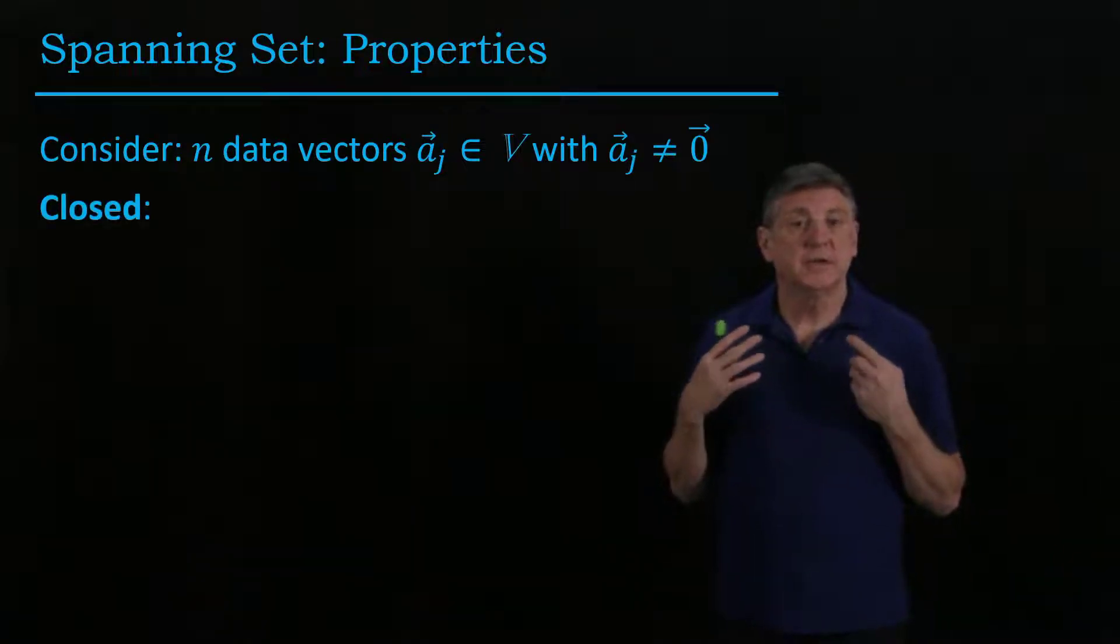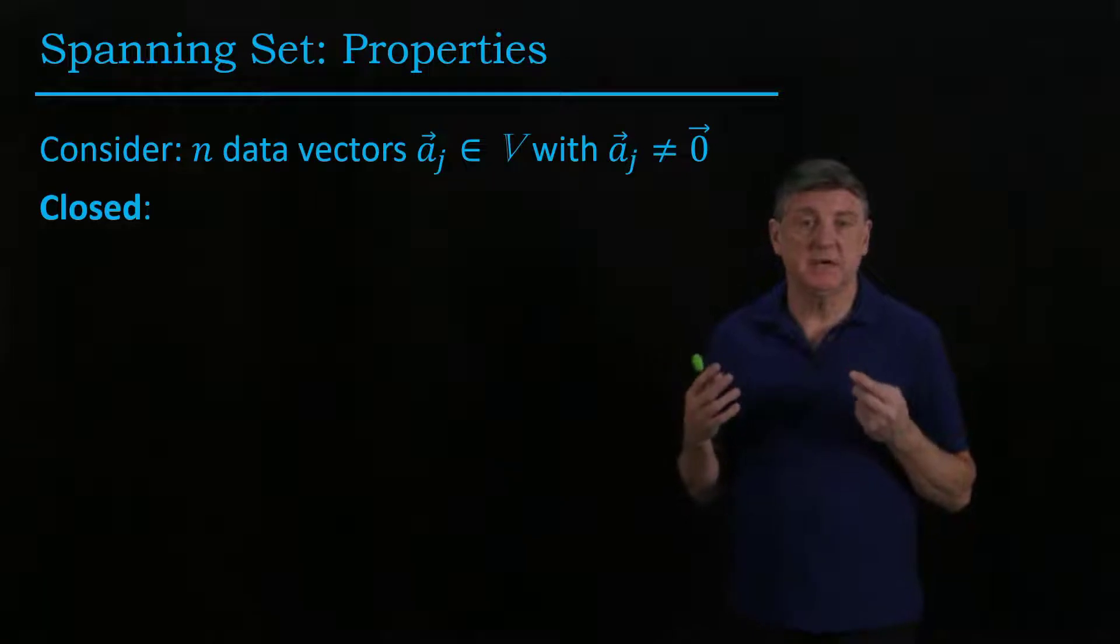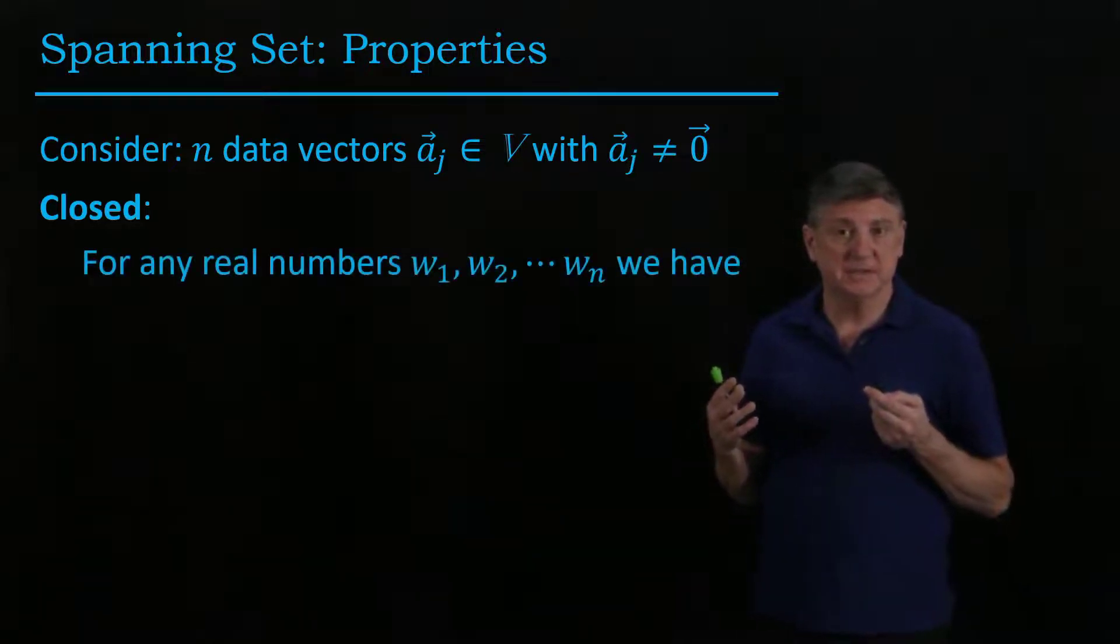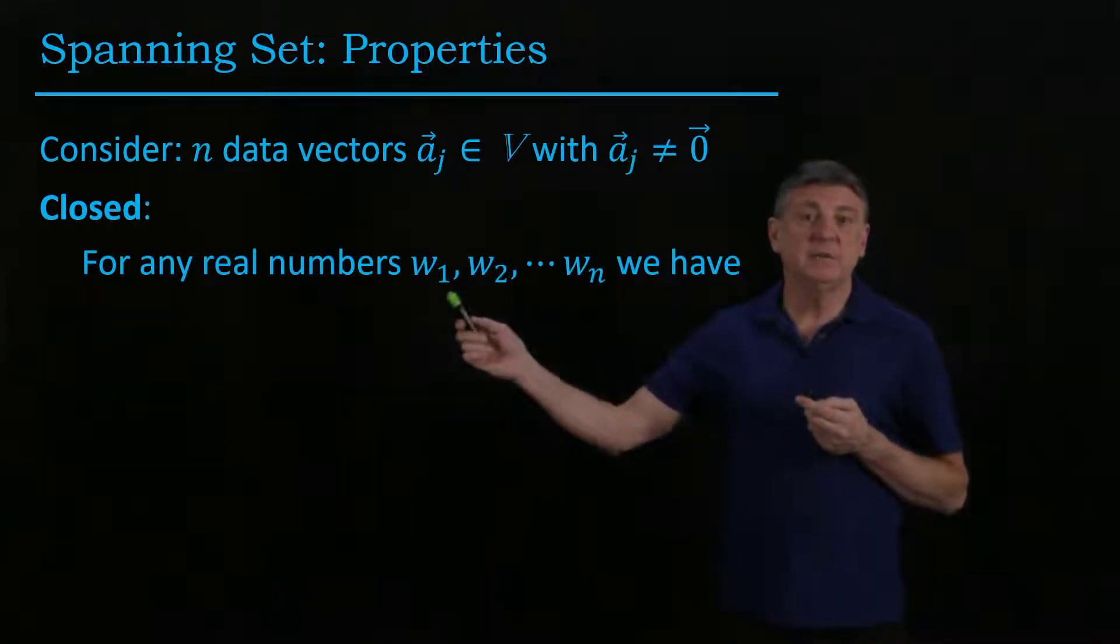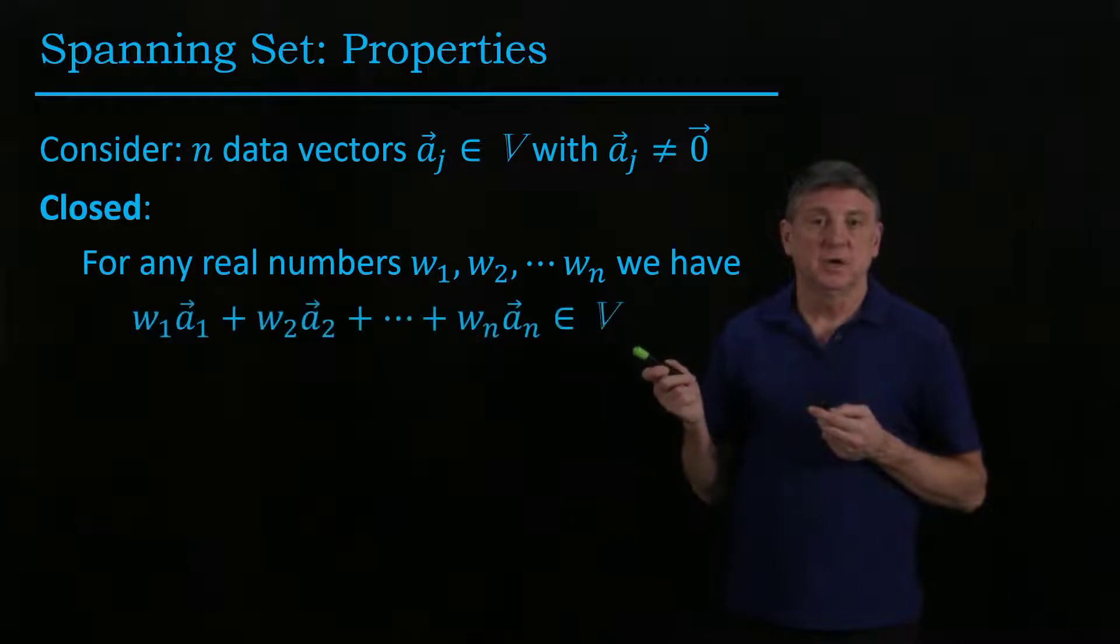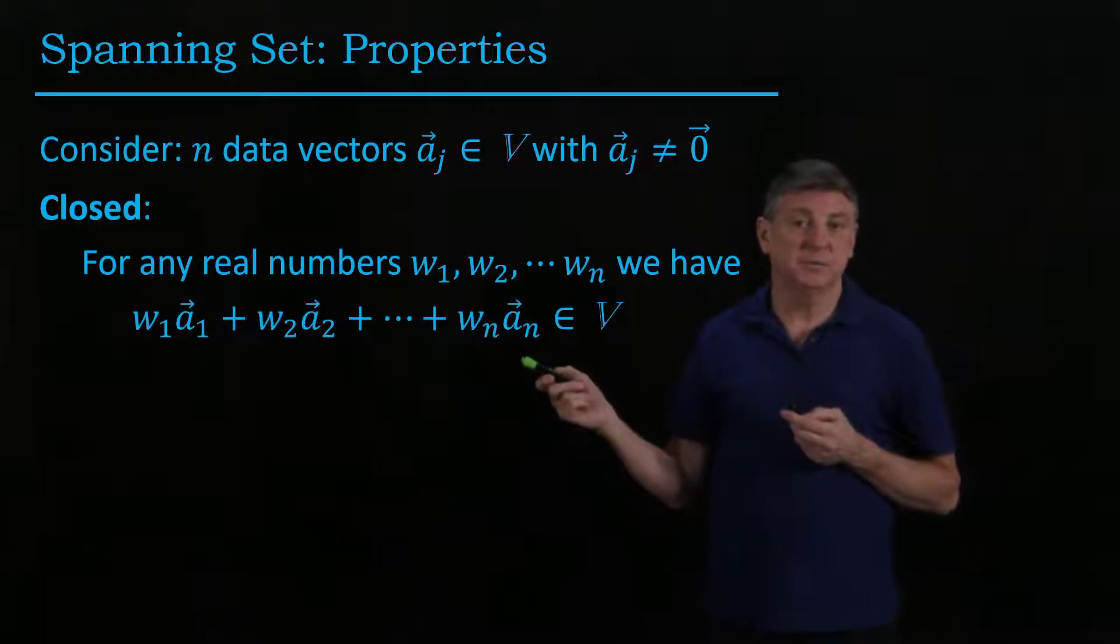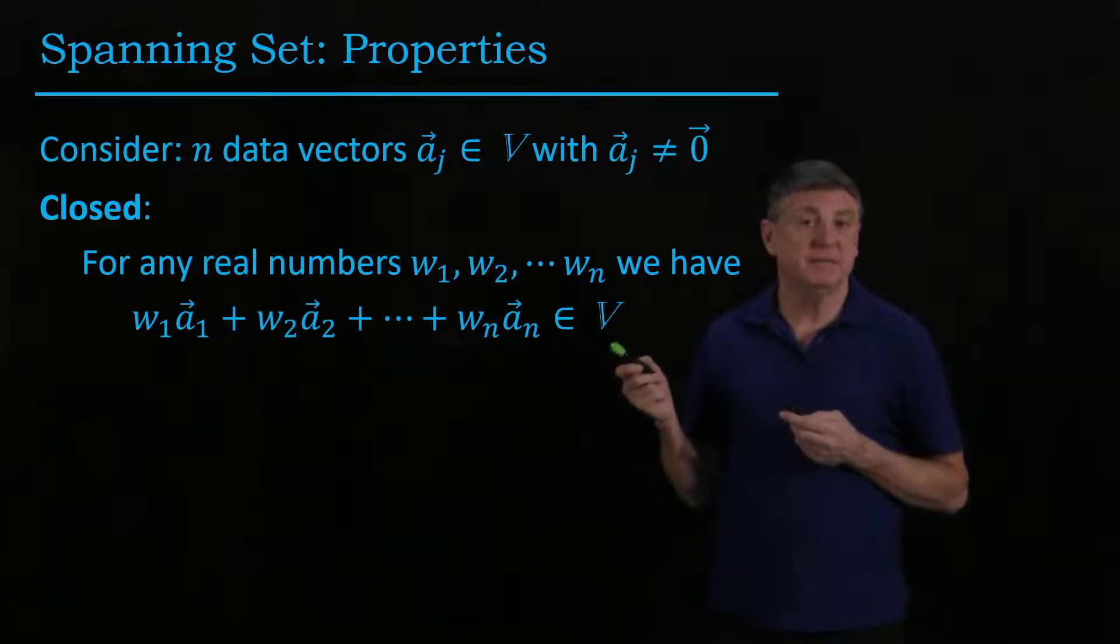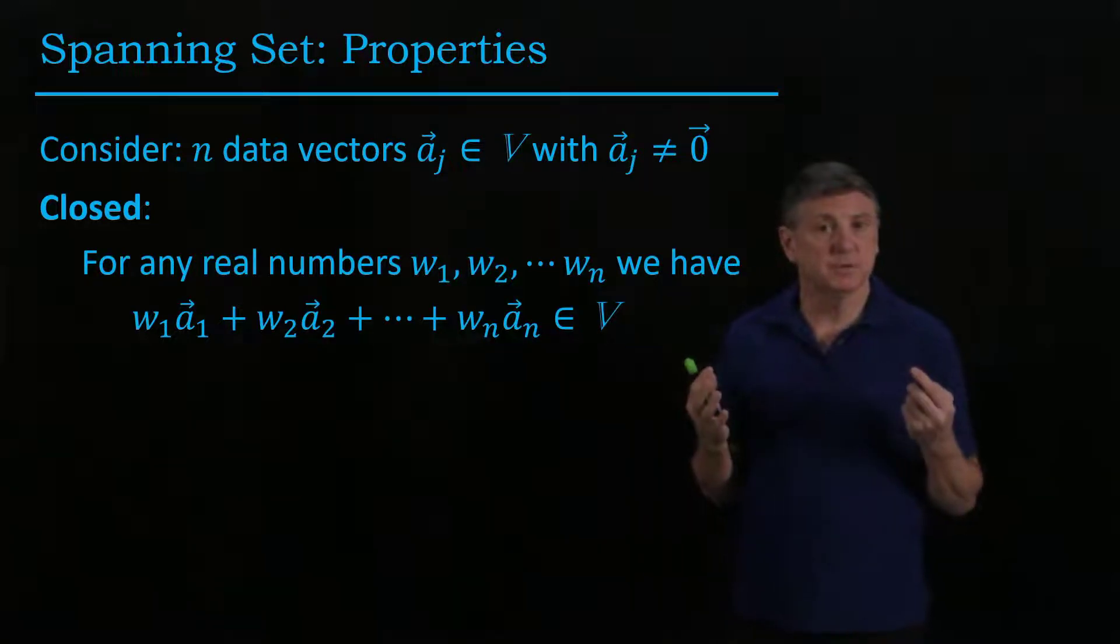One property from the definition of vector spaces is that for any real numbers w_1, w_2, ..., w_n we choose, a linear combination of those spanning vectors must be in that vector space. This is the closed property.